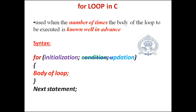Welcome to my session. In this session I am going to explain the for loop in C language. As we have seen in our previous session, there are three types of loops: the while loop, the do-while loop, and the for loop. In this class I am going to discuss the for loop.